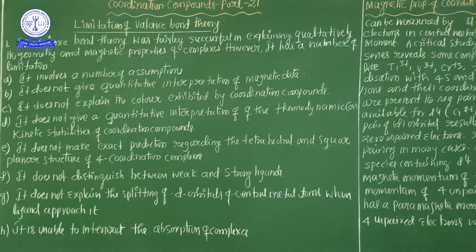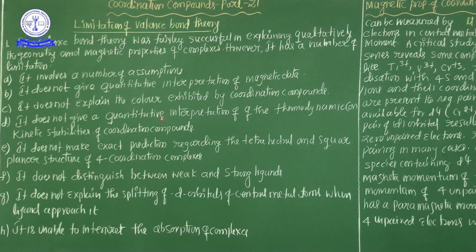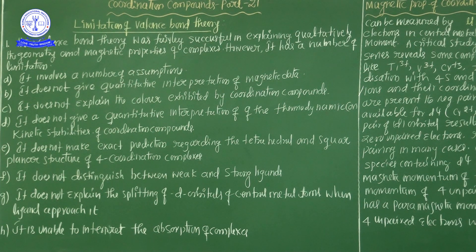Hi students, good morning to all. In this session, we are going to discuss the limitations of valence bond theory. Already in my previous session, I completed the entire formation of complex compounds based on VBT theory — octahedral, tetrahedral, and square planar. VBT theory is a very familiar theory to explain the structure of coordination compounds, but it has some limitations. We will discuss what type of limitations there are.